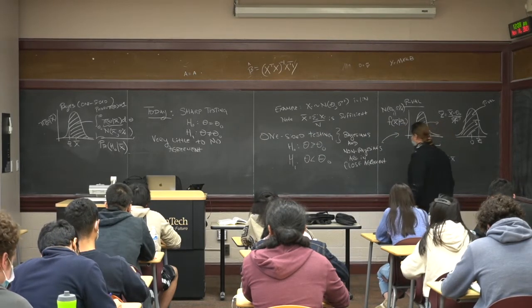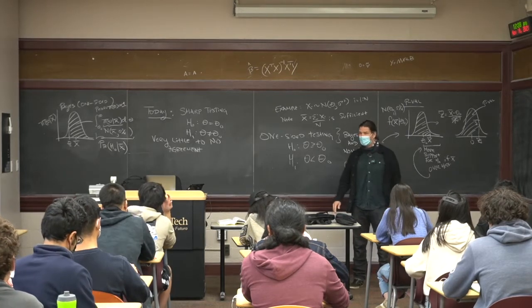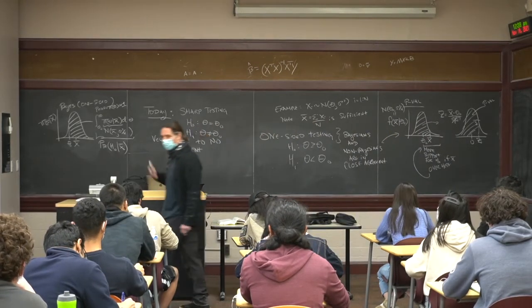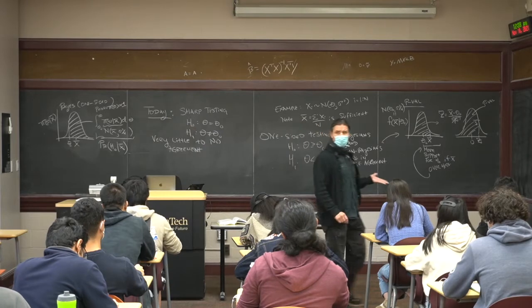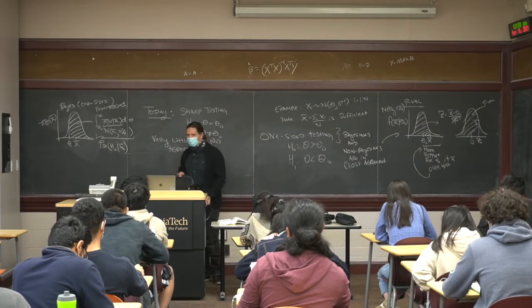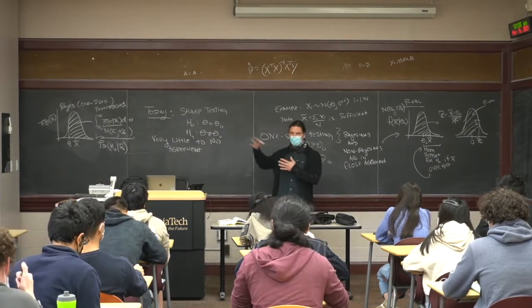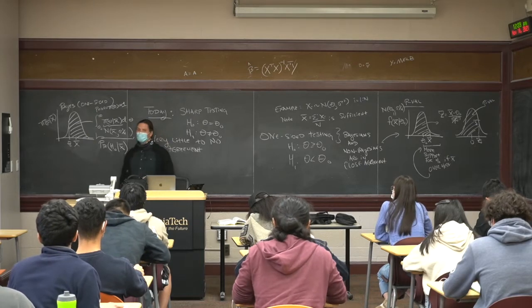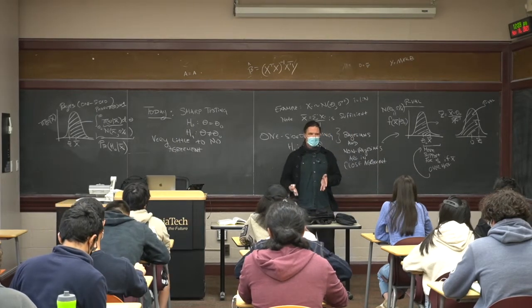This is just going to be the integral from theta naught to infinity of our posterior distribution. This area is that exact same area. This is the probability of H naught given x bar. So you just integrate over the posterior. The Bayesian and the non-Bayesian are going to give you the same number, but they're interpreting it differently.